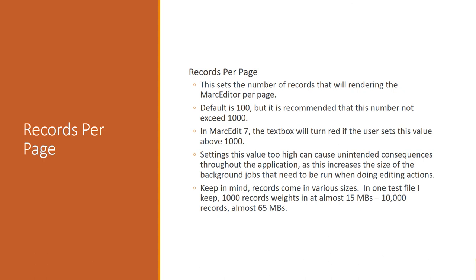The last setting is records per page. The MarkEditor sets the number of records that will render into the application. By default it's set at 100, which is why when I try to open that large file there's an initial pause while the application figures out how many pages are in that almost 400 megabyte file. I recommend not exceeding 1,000. In MarkEdit 7, I'll be turning the box red if you enter elements over 1,000, partly as a warning that there could be a performance impact. Folks don't realize that there are consequences to setting really high record sets — 1,000 records was 15 megabytes, 10,000 records closer to 65.